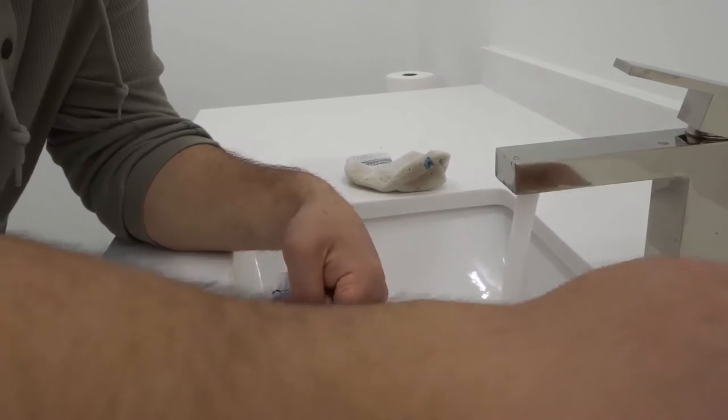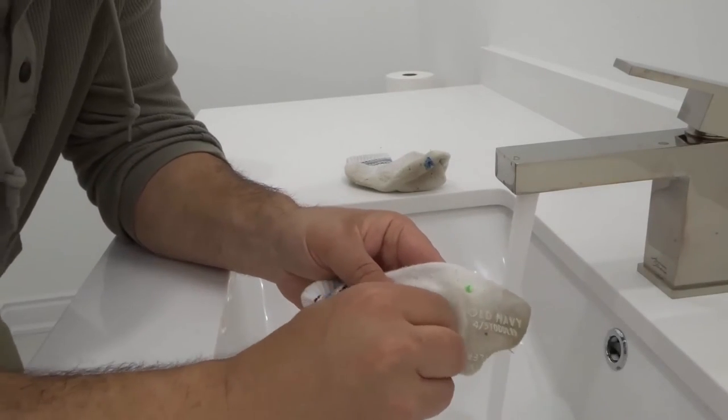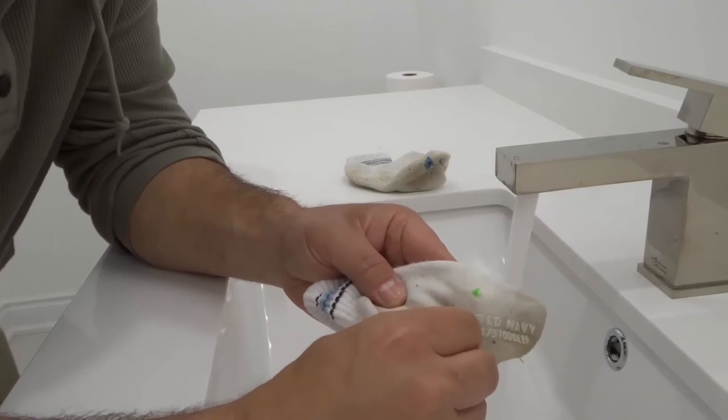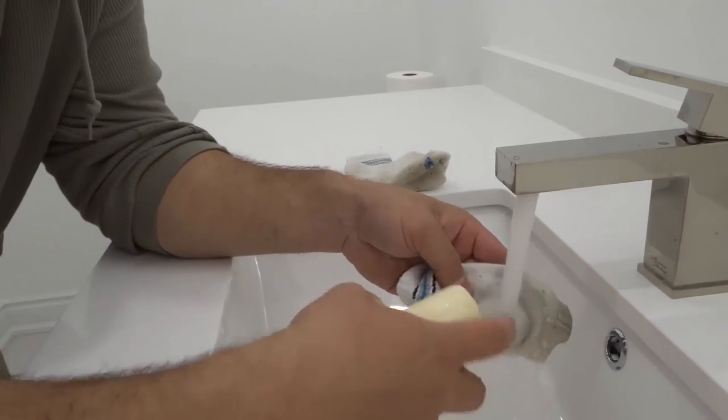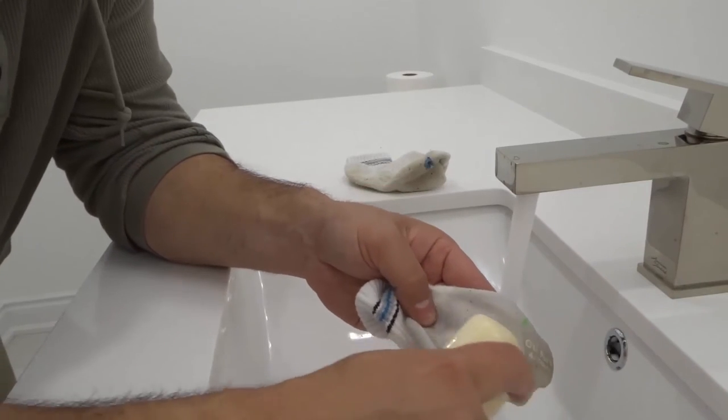Now once you've soaked it up, you can still scrape it a bit more because now it's wet and very malleable. So you can do a little bit more scraping, add a bit more soap—you want to continue going back and forth.